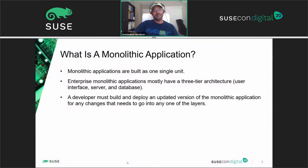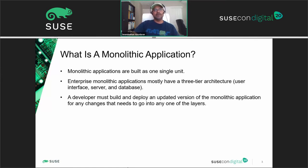Monolithic applications are built on a single unit. Enterprises have a three-tier architecture with a user interface, server, and database. A developer must build, deploy, and update the entire monolithic application for any change. Even if there's a change to a single layer, you have to completely redo it — it's not agile. You have to do a complete rollover, which is tedious, especially since people work 24/7 and bringing down a product is not a good option.